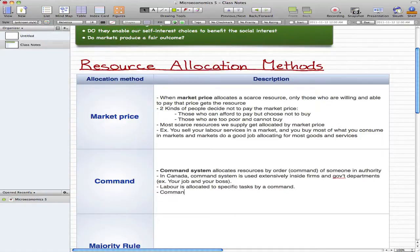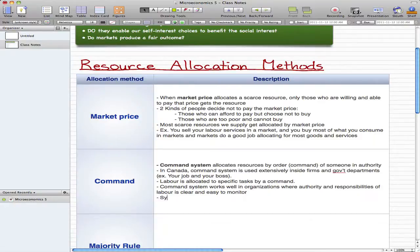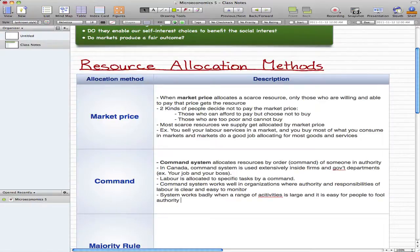The command system works well in organizations where authority and responsibilities of labor are clear and easy to monitor. But the system works badly when the range of activities is large and it is easy for people to fool authority.